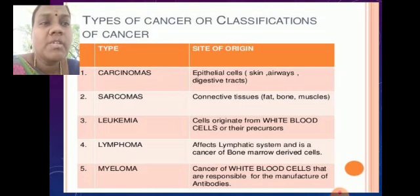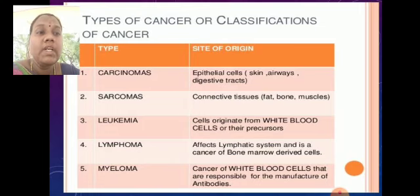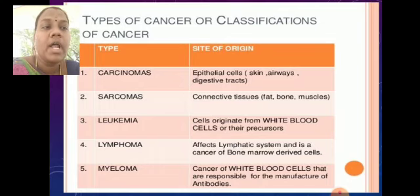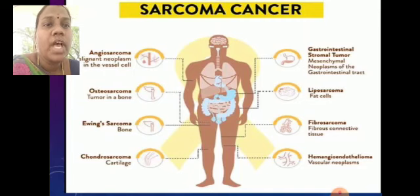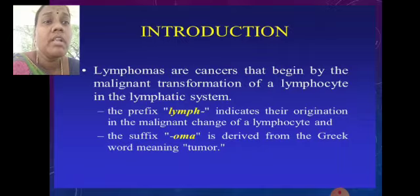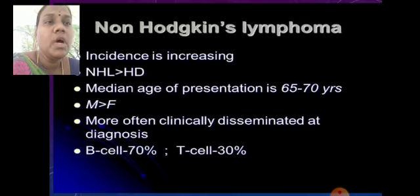Carcinoma cancer mainly affects epithelial cells; sarcoma cancer is in connective tissues; leukemia cancer is in white blood cells; lymphoma cancer is in bone marrow; and myeloma cancer is also in white blood cells. We need to identify the symptoms, causes, and treatment to know how to cure cancer.